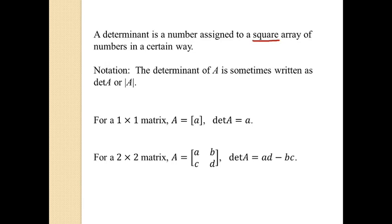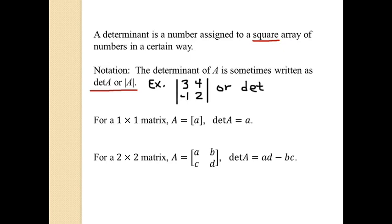The notation is written as det(A) or parallel brackets with the matrix A inside. So for example, you could have straight brackets with 3, 4, negative 1, 2 — that would mean take the determinant of the matrix 3, 4, negative 1, 2. Or you could write det and then your regular matrix brackets with 3, 4, negative 1, 2.